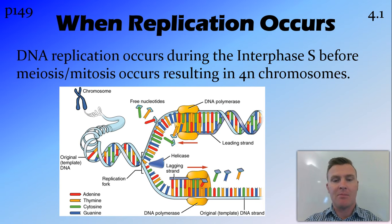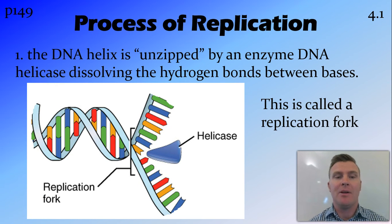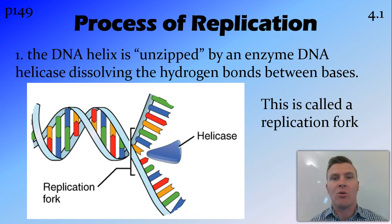This diagram sums up the whole process, but we'll go through each part in a little bit more detail. So the first thing to happen is an enzyme called DNA helicase comes through and unzips the base pairs. What it does is dissolve the hydrogen bonds between the bases, leaving us with two exposed strands of DNA. And this is called a replication fork.